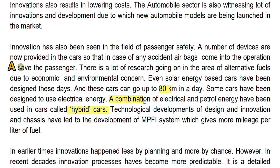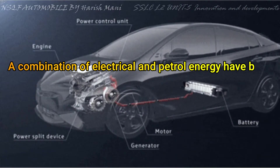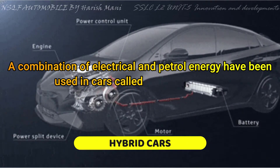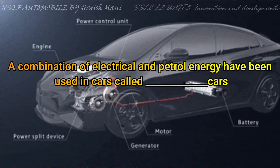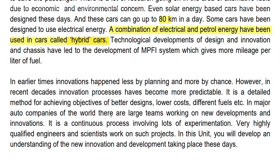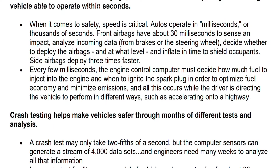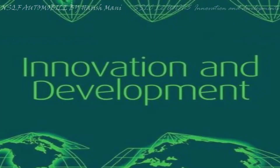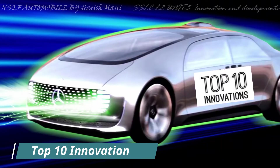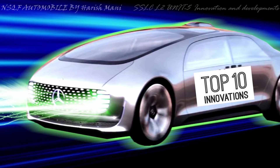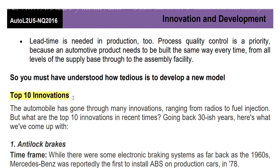This is a hybrid car. The combination of electrical and petrol energy has been used in cars. This is called a hybrid car. Moving on to the top 10 innovations — in the automobile field, there are many innovations, and we need to study some selective top 10 innovations.